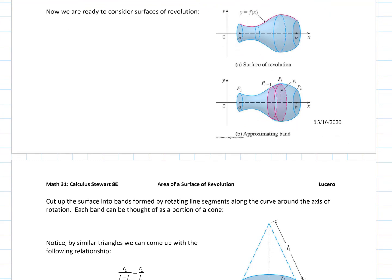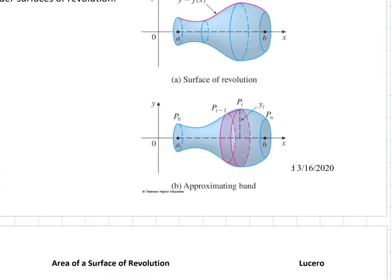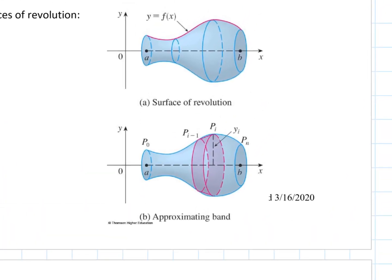Now we're ready to consider these solids of revolution. I took these images from the book so we can look at them. If we're looking at this solid y equals f of x and we want to find the surface area, we create it by looking at individual bands. If we cut a to b into n little subintervals, on each subinterval we'll create a band of surface area.